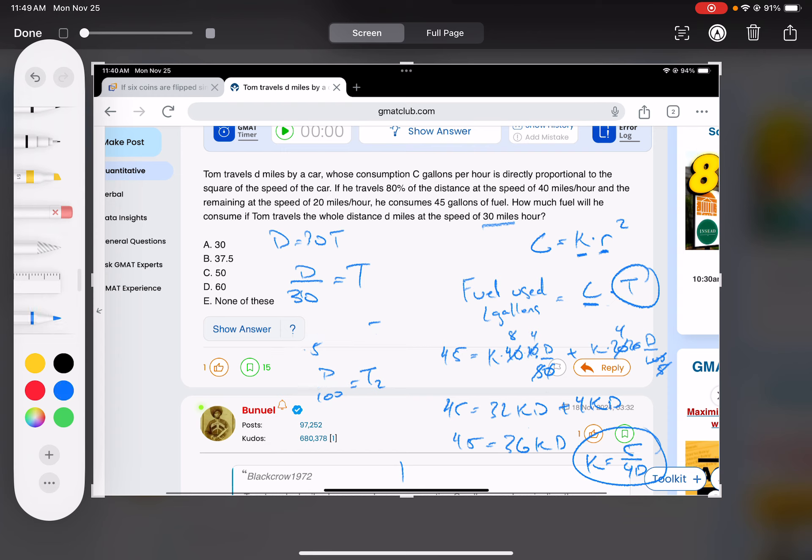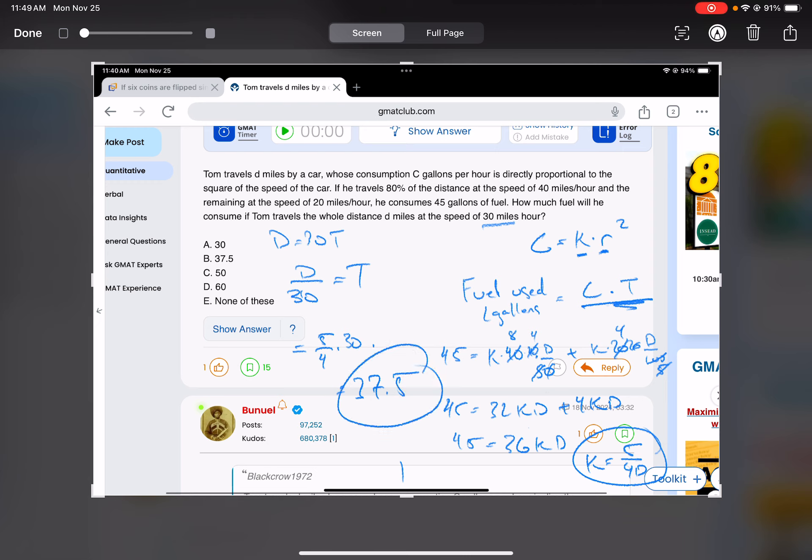So now I can put this together to get the fuel used, C times t. So C, the fuel used is going to equal C times t. So k times r squared. So k was 5 over 4d times r squared. The rate was 30 squared times the time of d over 30. So 1/30 will cancel, d will cancel. And then 5/4 of 30, I mean, a quarter of 30 is 7.5. Because half of 30 is 15, so half of that is 7.5. And 5 times 7.5 is going to equal 37.5. Whew.